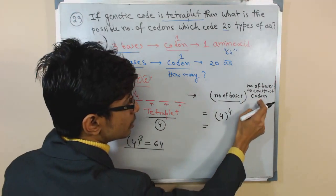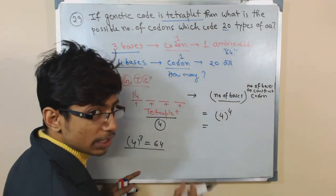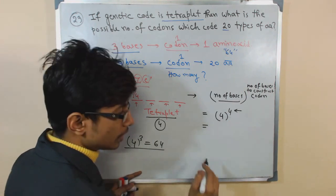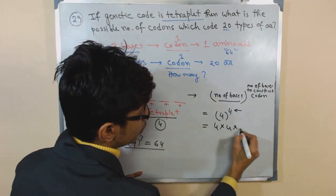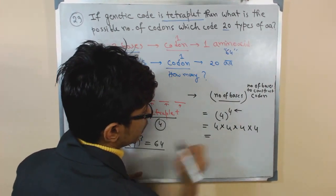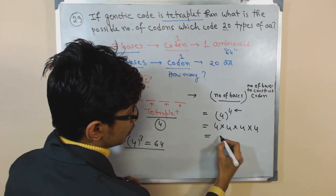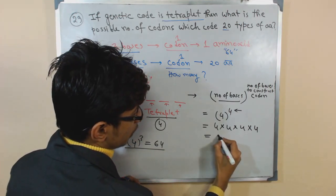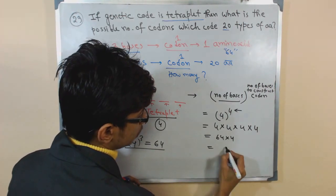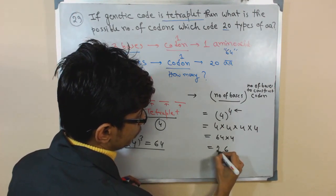Now in this case, the number of bases to construct the codon, as they are telling us is tetraplate, we should put four there. So it will be 4 × 4 × 4 × 4, which will give you 64 × 4, which is 256.